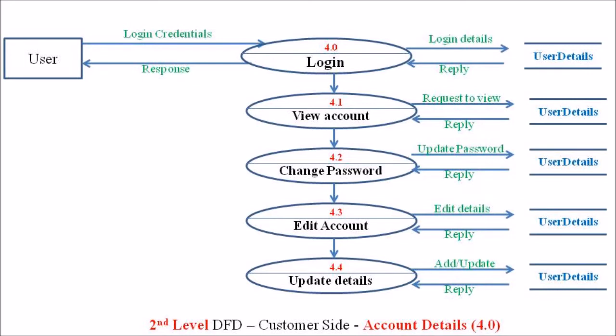The final process associated with this level 2 DFD is update detail, which is process 4.4. This last process updates all the changes made by the user, and those changes are reflected in the user detail data store area. The data store areas are represented by two parallel lines, and all processes in this diagram are associated with the single data store — user detail.